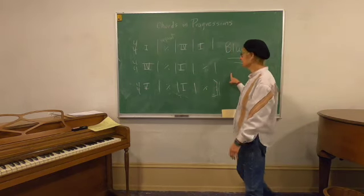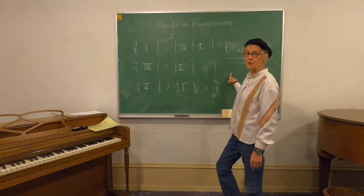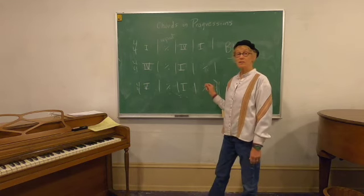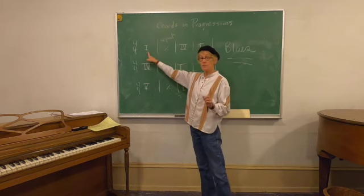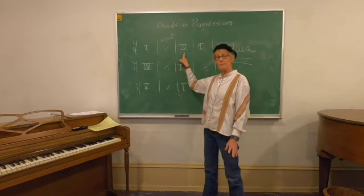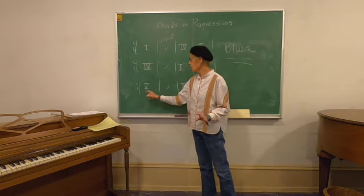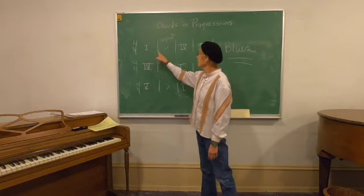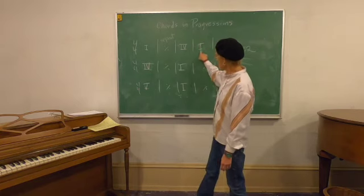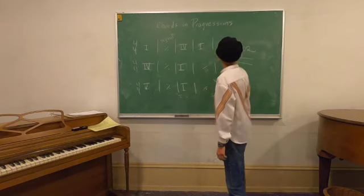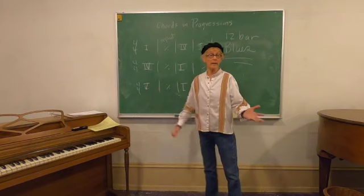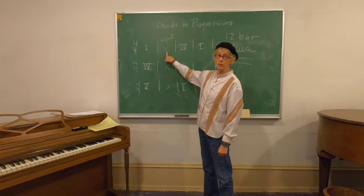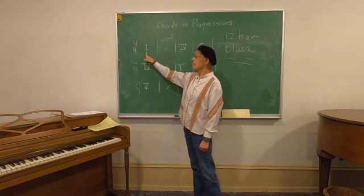What you see here is a blues progression — you've heard blues a million times so you know what it sounds like, but this is a shorthand version you can plug into any key. The one means tonic, the first chord in the key; the four is the subdominant, the fourth chord; and the five is the dominant or fifth chord. In the blues progression we have 12 bars — that's the standard form.